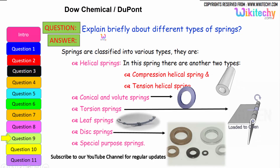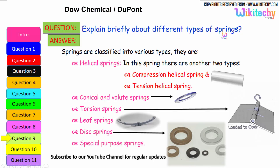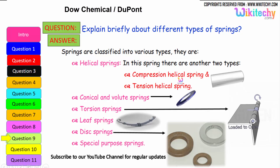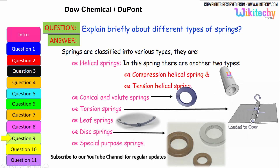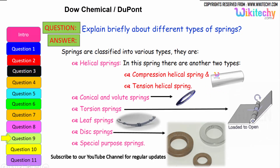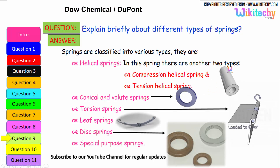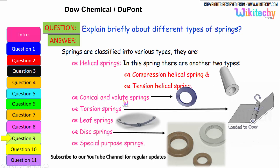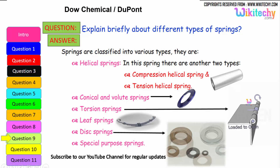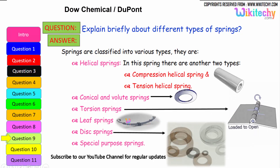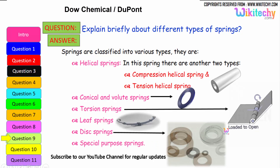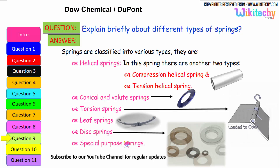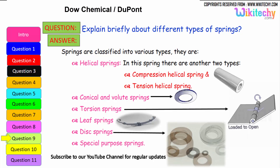Let us see briefly the different types of springs. Springs are classified into various types: helical springs — which include compression helical springs and tension helical springs — conical volume springs, torsion springs, leaf springs, disk springs, and special purpose springs.